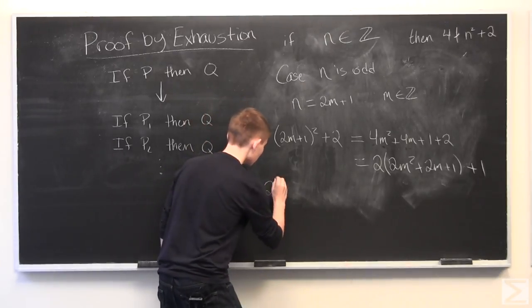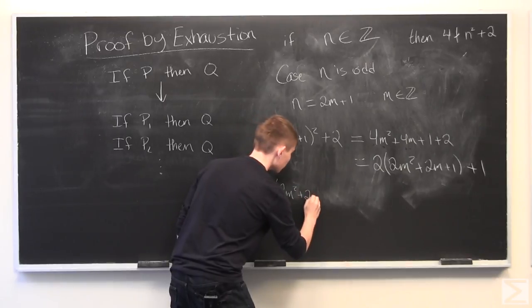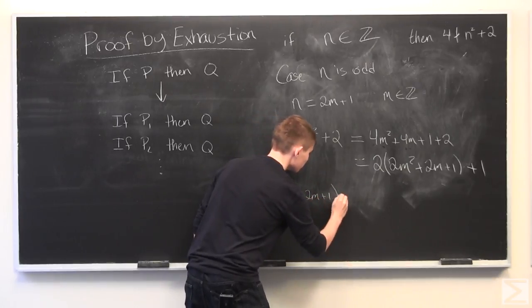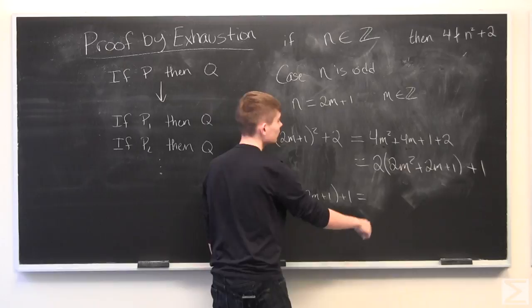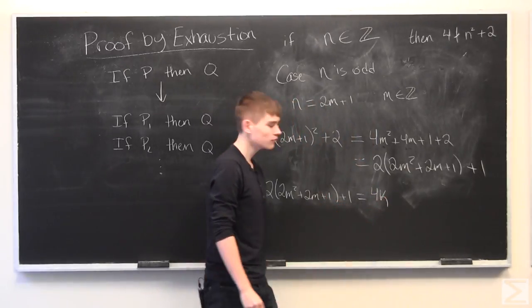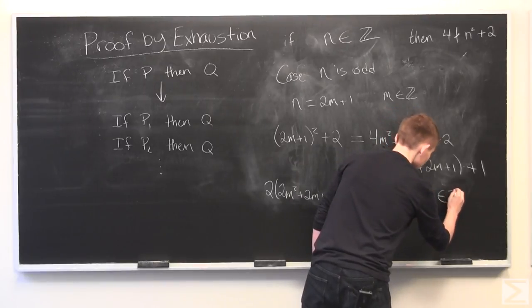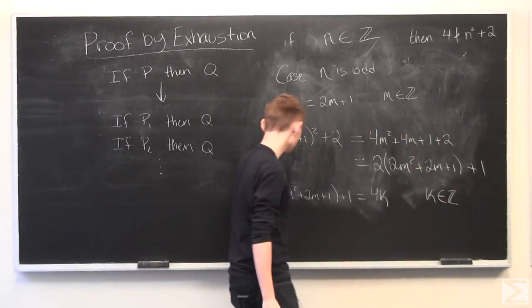All right, and so what we have is that this term is, again, equal to a multiple of 4. So we have 4 times K, where K is just some integer.